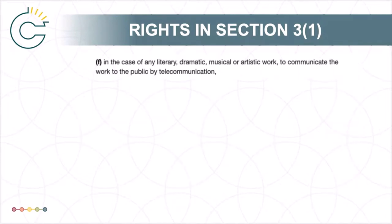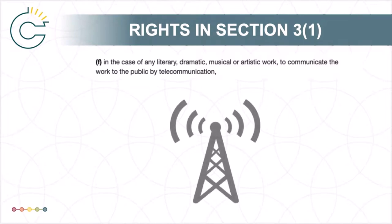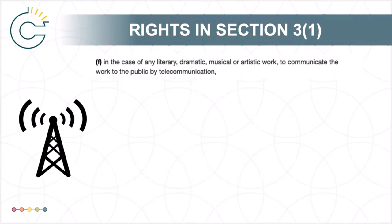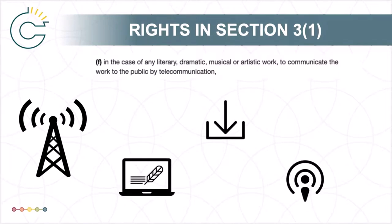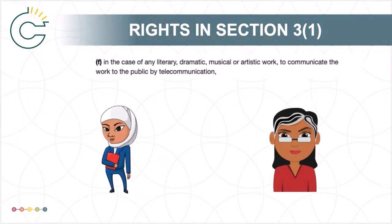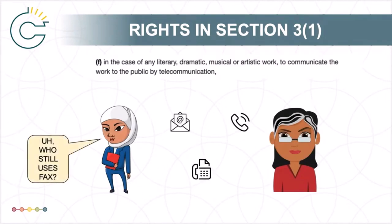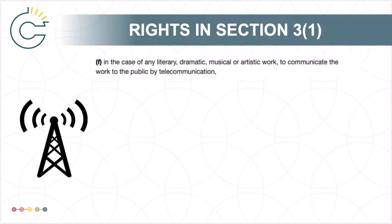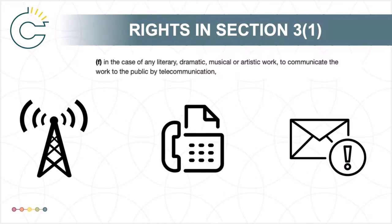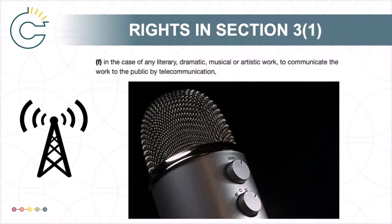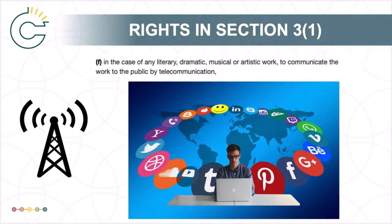Subsection 3.1(f) details another important sole right of the copyright owner: the right to communicate a work to the public by telecommunication. In simpler terms, this right covers the distribution of works over the Internet and other forms of telecommunication. However, this right doesn't cover every means of telecommunicating a work. It doesn't cover single, point-to-point, or person-to-person forms of telecommunication, like email, phone, and faxes. That said, the telecommunication right does cover mass unsolicited faxing, or emails like spamming. More importantly, it also includes posting material on publicly available Internet sites. Furthermore, a communication is still considered to the public regardless of whether the material can be downloaded or is streamed. Court and copyright board decisions have clarified that in cases where the telecommunication right is infringed on the Internet, it is not the Internet service provider that is responsible, but the uploader.